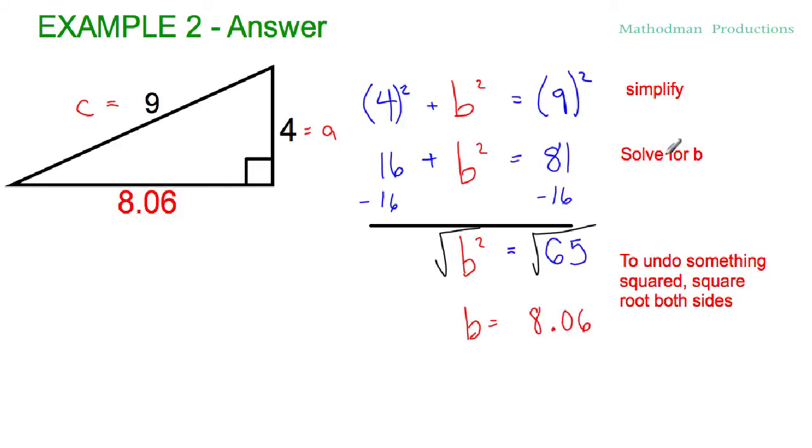Use your algebra skills and solve for b. First step is to subtract 16 from both sides. b squared drops down. 81 minus 16 is 65. And the very last step of the Pythagorean theorem, or to undo something squared, is to square root both sides. The square root of b squared is b. And square root of 65, I just rounded to the nearest hundredths, is 8.06.